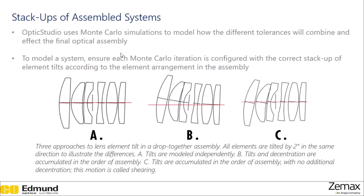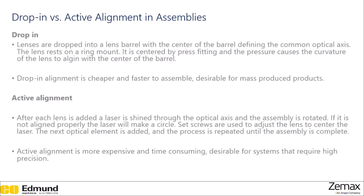Three approaches are shown for modeling systems where all elements are tilted by two degrees. In the first, each lens tilt is independent of other lenses, so every lens is tilted two degrees off the optical axis. In the second, tilts and de-centration are accumulated from one lens to the next, so as both tilt and de-centration occur, the optical axis is displaced further. In the third, tilts are accumulated in order of assembly but there is no additional de-centration, so each tilt is two degrees greater than the previous but de-center is not accounted for. Which model you use depends on how the lenses will couple to each other in the barrel.